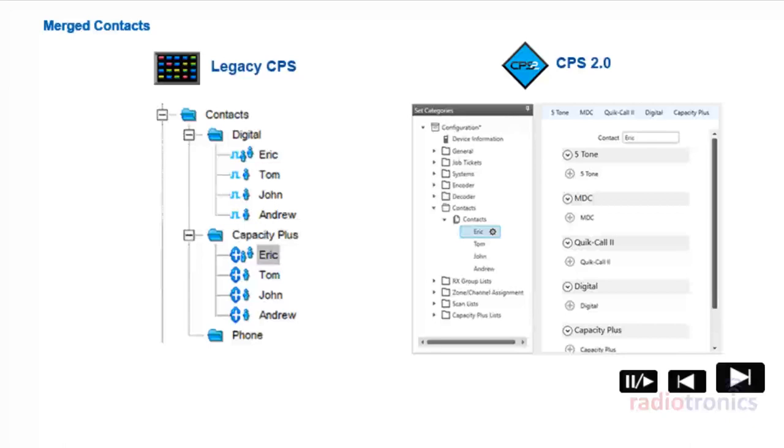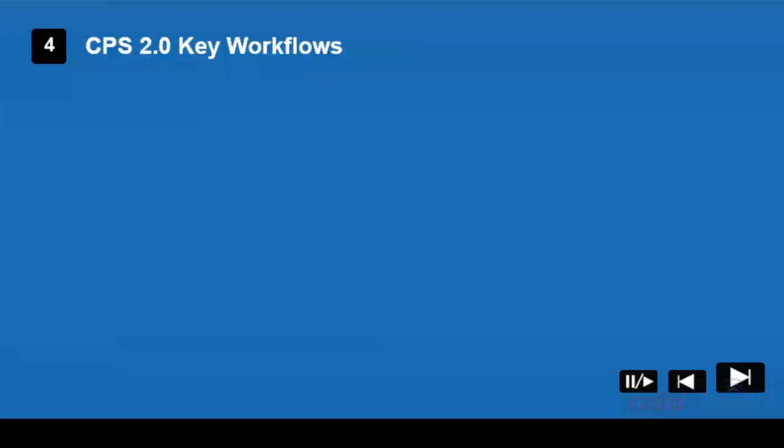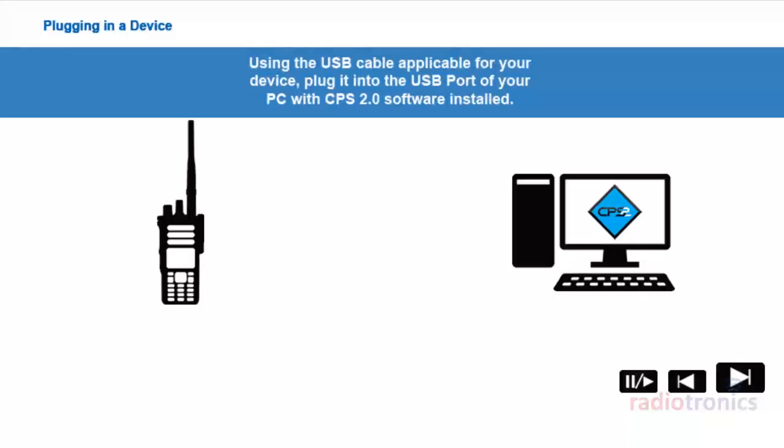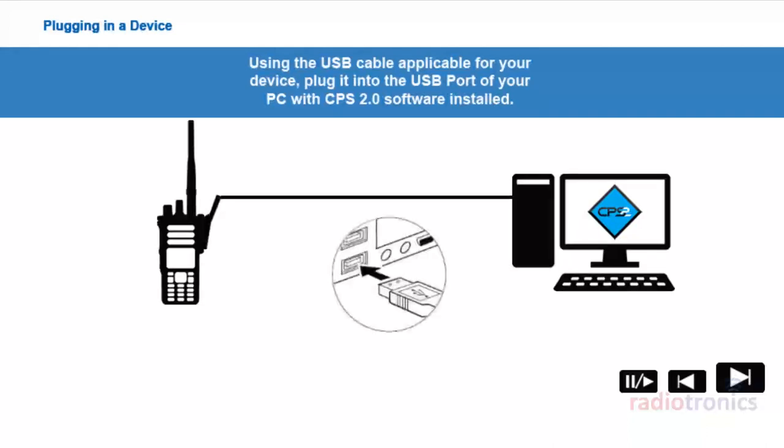In Module 4, we will go through the key workflows with MotoTurbo CPS 2.0. Using the USB cable applicable for your device, plug it into the USB port of your PC with CPS 2.0 software installed.